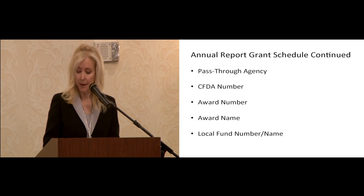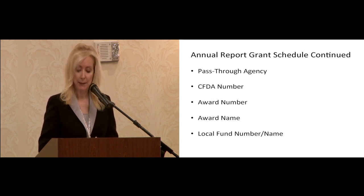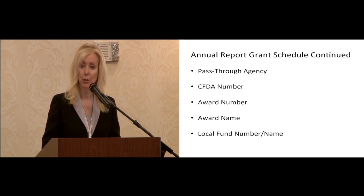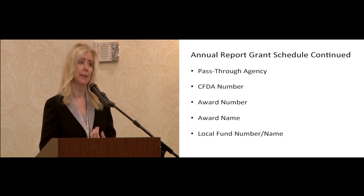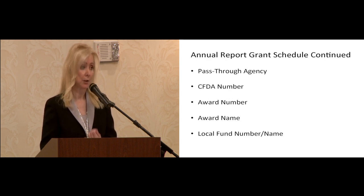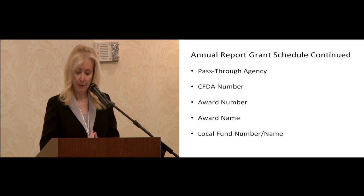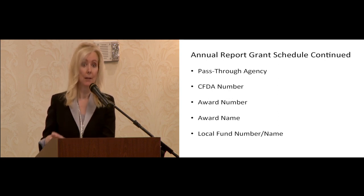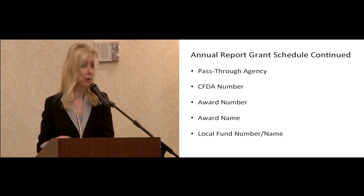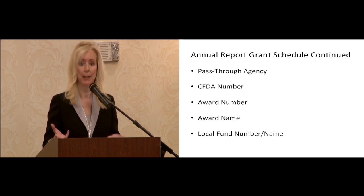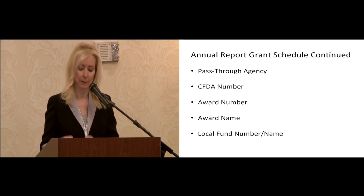You'll need to identify the pass-through agency — enter the name of the state agency or other entity that awarded the grant when it was not awarded directly to you by the feds. Do not use an acronym, but use the full name. So if it's DCS, don't write DCS — use Department of Child Services. The information you're inputting goes to the CEPA schedule, and we want the full name on there because the feds don't know what DCS means.